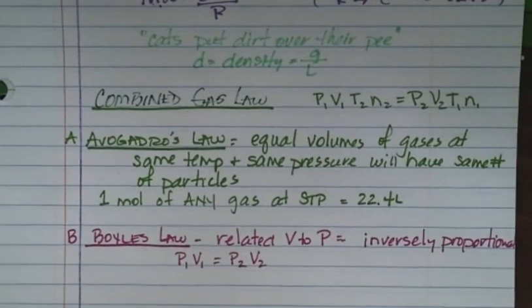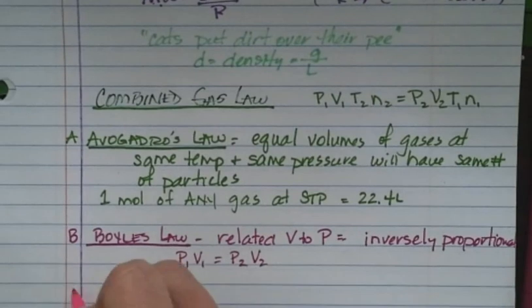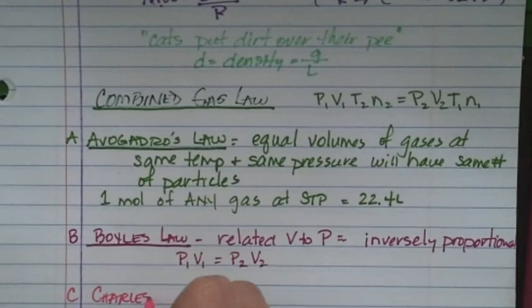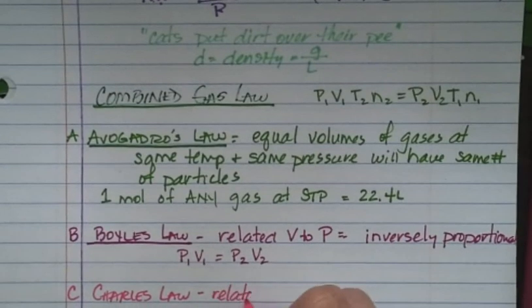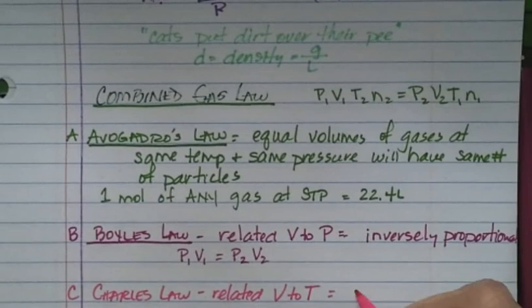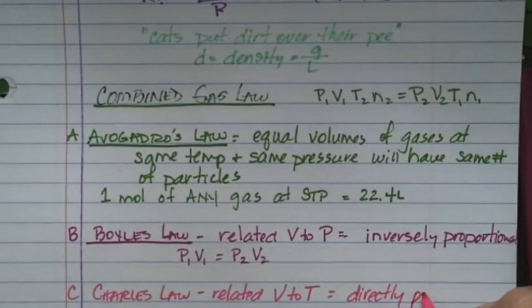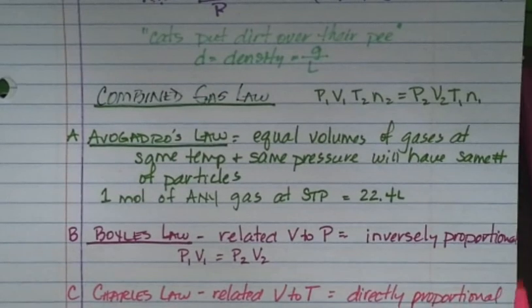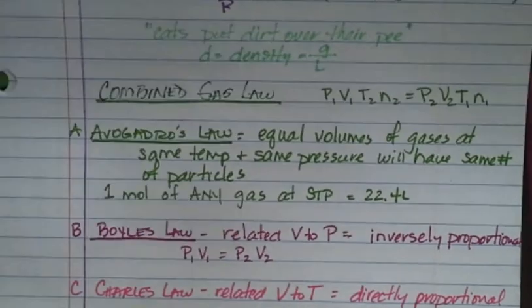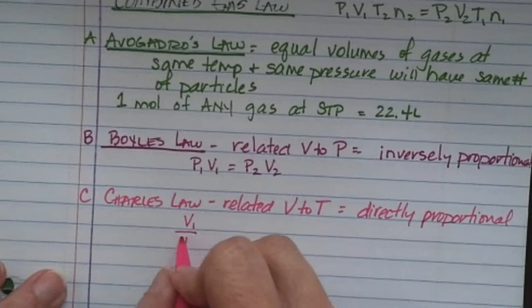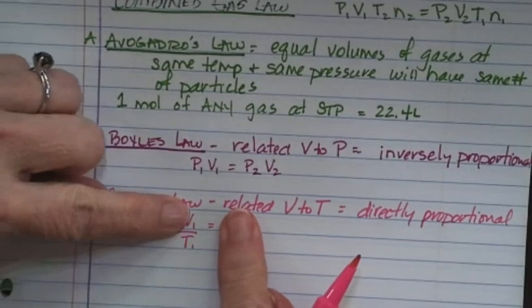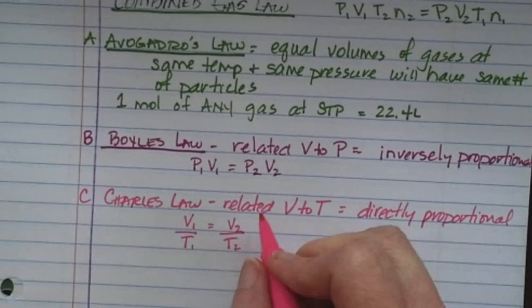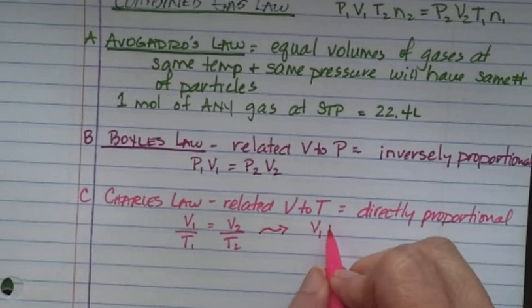The next one is Charles' law. Charles linked volume and temperature, and he found they were directly proportional — if one goes up, the other goes up. Written as an equation: V1 over T1 equals V2 over T2. If you divide and get 10, if V goes up, T also has to go up to maintain the same answer. Another way of writing that without fractions: V1 times T2 equals V2 times T1.